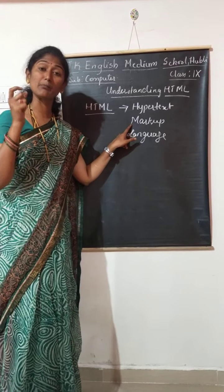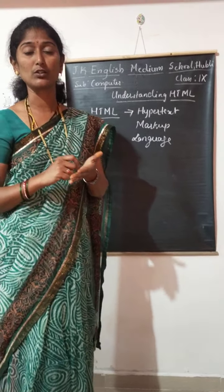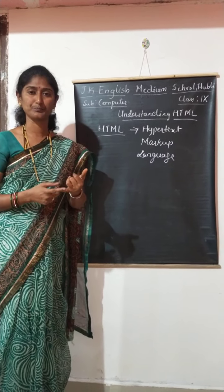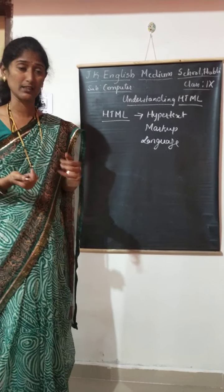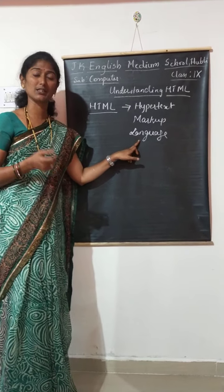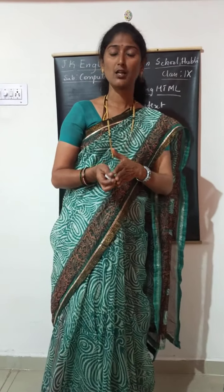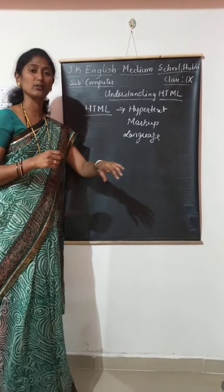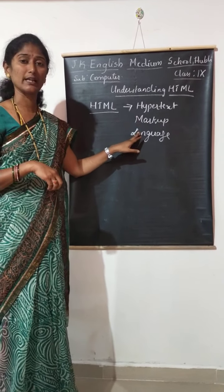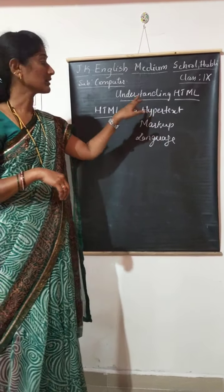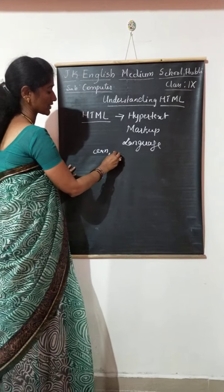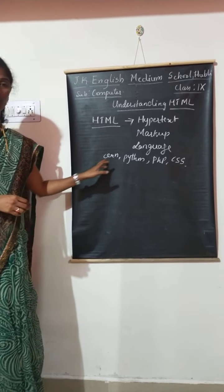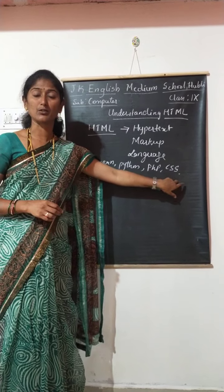Markup means marking the information or data or text — just as you mark things in your textbooks, it is the marking of text in websites. You can make text bold, give it a professional look, or make it italic — that is marking up. Language means there are some syntax and rules we follow; we cannot write coding however we want. Along with HTML, you can also make use of other languages such as Python, PHP, and Cascading Style Sheets.